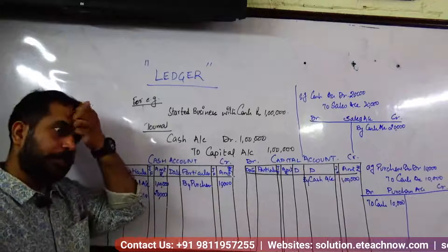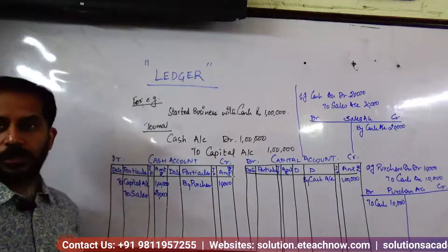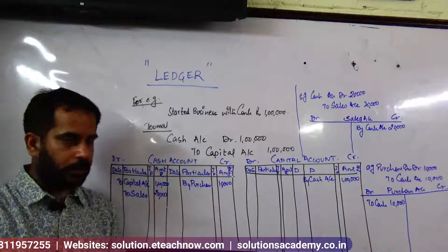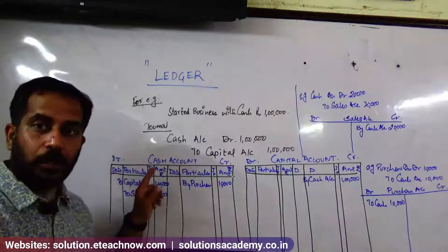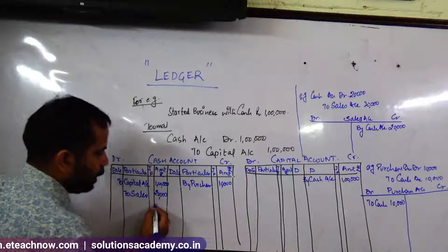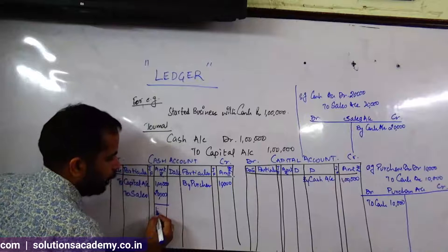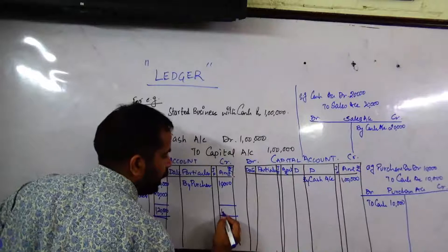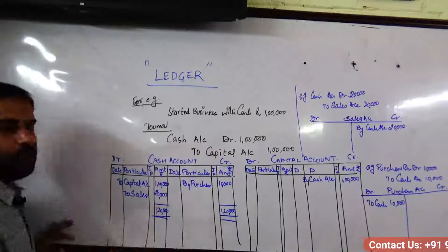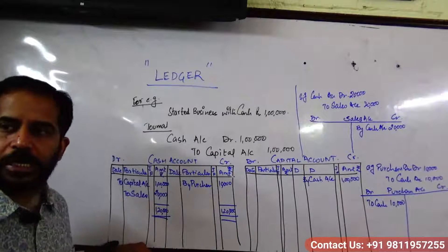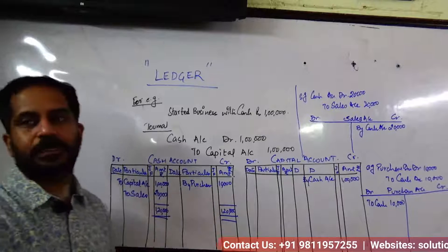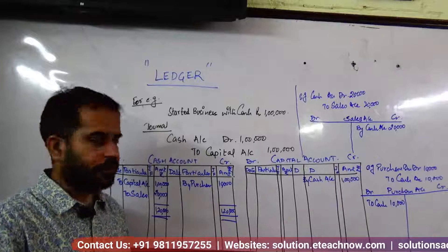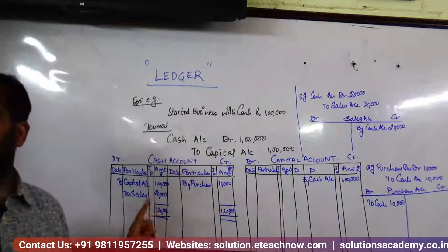Now, how do we close the account? We can't leave it open. We classified the data, and now we have to close the cash account. The debit side is larger — say 1,20,000 — so you put 1,20,000 on both sides to balance. The debit side is bigger and the difference is 10,000.